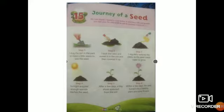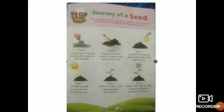Step 5: After a few days, a tiny shoot sprouted from the soil. After that tiny shoot sprouted from the soil, this is a healthy plant and it bore flowers. This is the journey of a seed. With the help of the seed, David or you can grow a flower or anything you wish to grow.